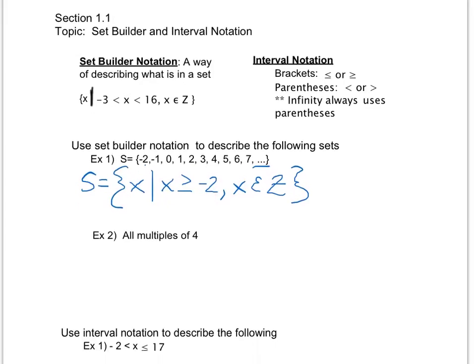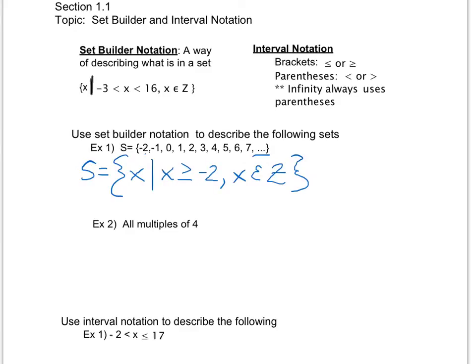If I do the same thing with example 2, now I have all multiples of 4. So now my set is going to be all x's, such that, well, how do I get multiples of 4? Well, 4 times 0 gives me 0 as a multiple of 4. So if I think about my set a little bit, 4 times 0 is 0, 4 times 1 is 4, 4 times 2 is 8, 4 times 3 is 12, 4 times 4 is 16. So it looks like I'm multiplying 4 by different numbers.